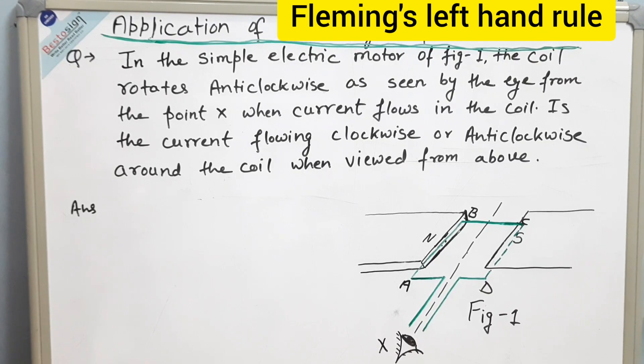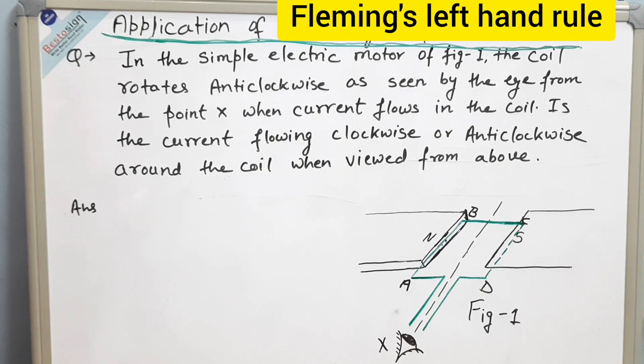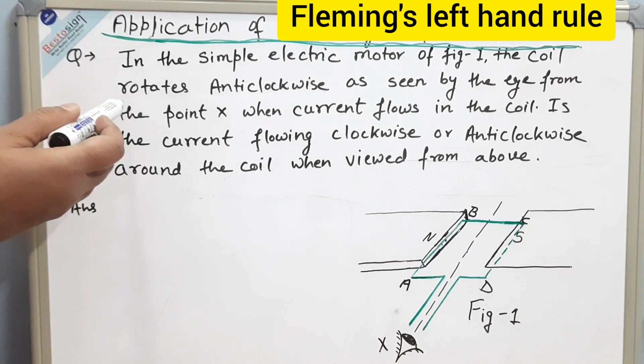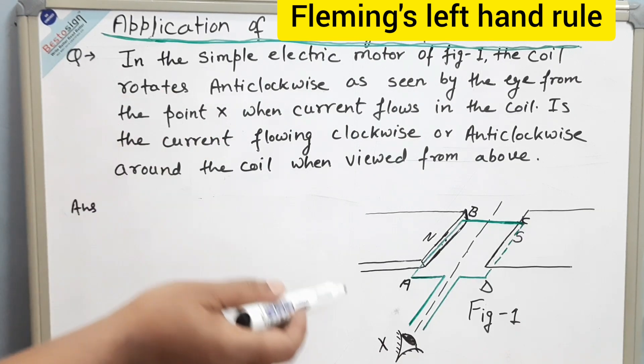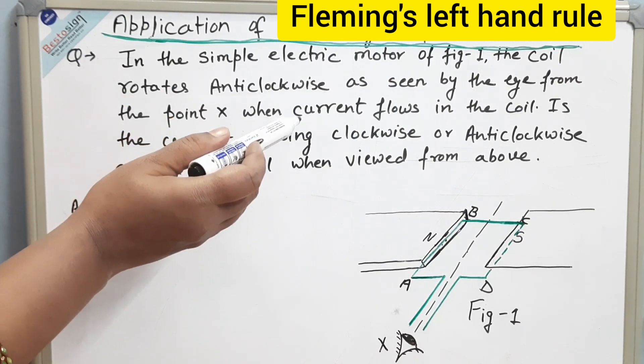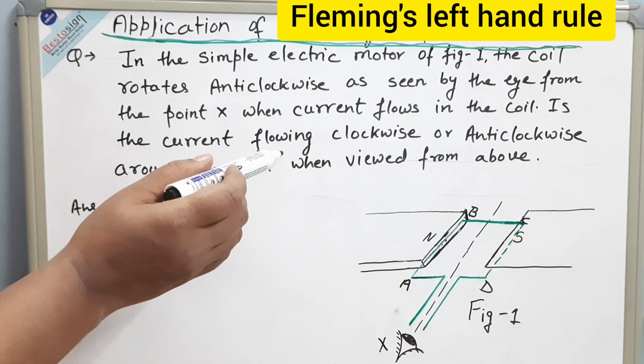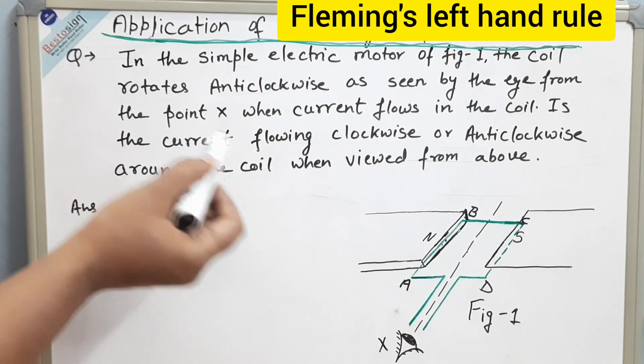In this video, I am going to discuss a question which is based on Fleming's left hand rule. The question is, in the simple electric motor of figure 1, the coil rotates anti-clockwise as seen by the eye from the point x when current flows in the coil. Is the current flowing clockwise or anti-clockwise around the coil when viewed from above?